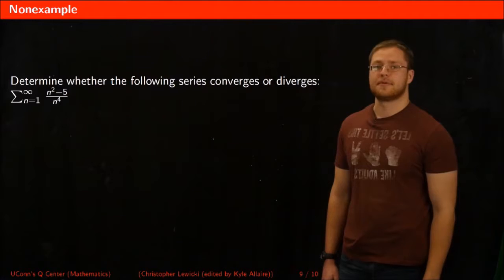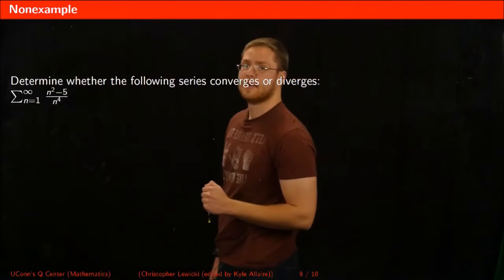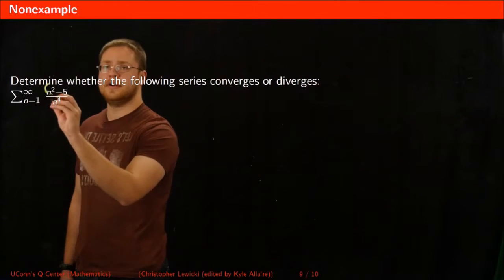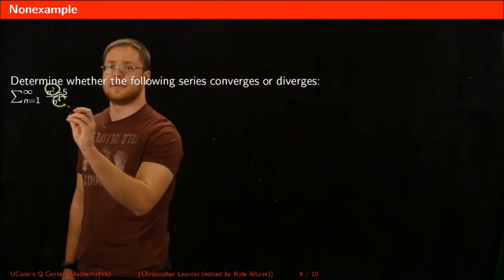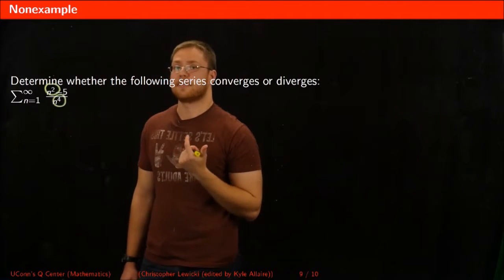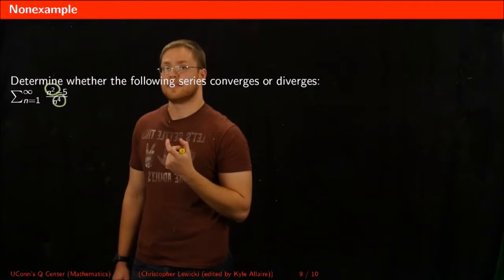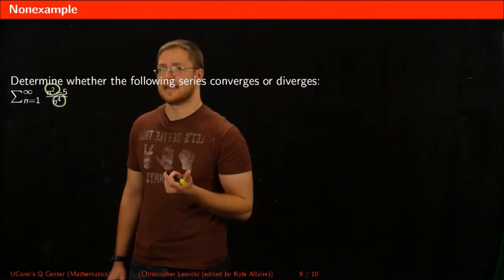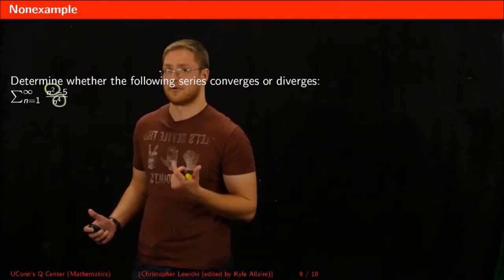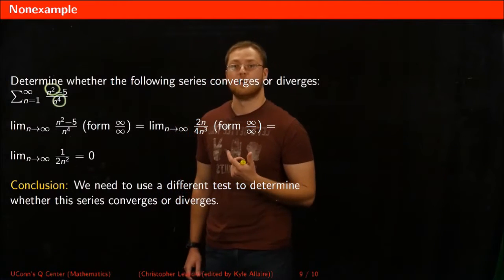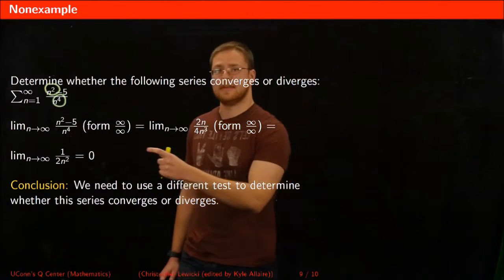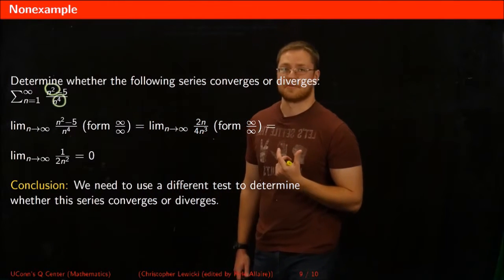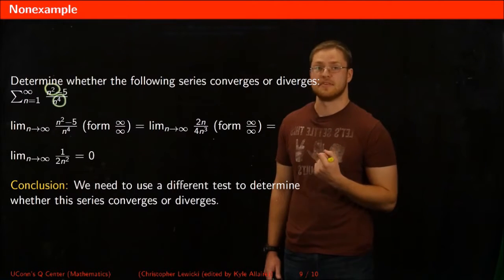Now let's look at an example of a series where we cannot use the divergence test. With this rational expression, the degree in the numerator, two, is smaller than the degree in the denominator, four. That means the limit as n goes to infinity is always going to be zero. You can verify this with L'Hôpital's rule. Because the limit is zero, we cannot use the divergence test to say anything about this series — we'll have to use a different test.